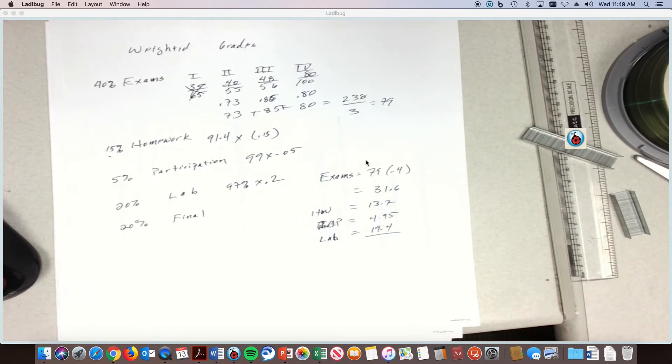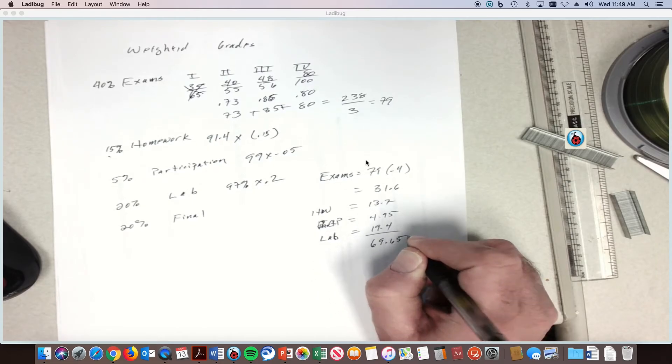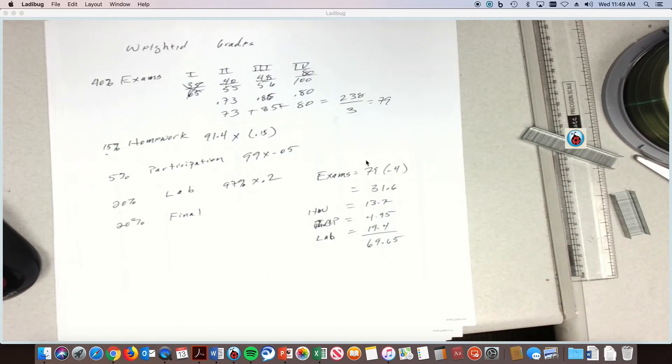So let's add all that up. So far we've got 31.6 plus 13.7 plus 4.95 plus 19.4. We've got 69 percent, 69.65 percent of your grade done so far. Well, that's a high C plus or B minus almost right there, so you don't even have to show up for the final if you don't want to. If you're happy with a C plus or B minus, but you've done all this work so you show up for the final.